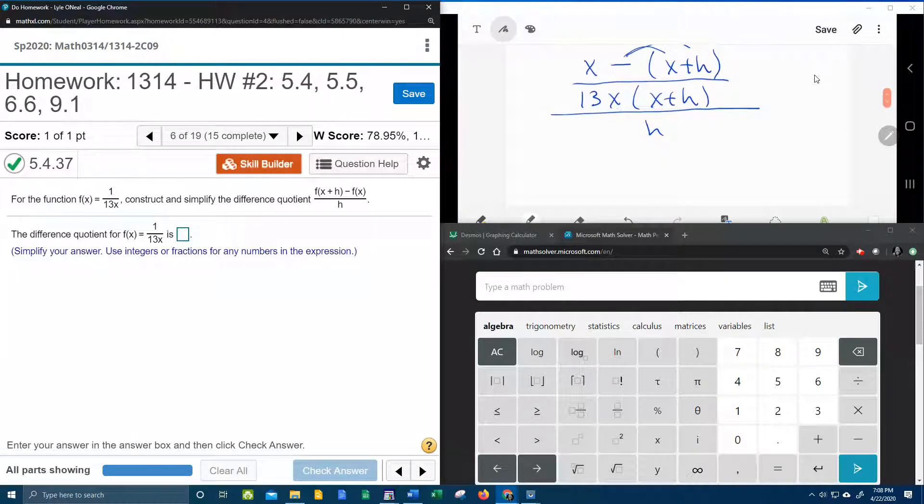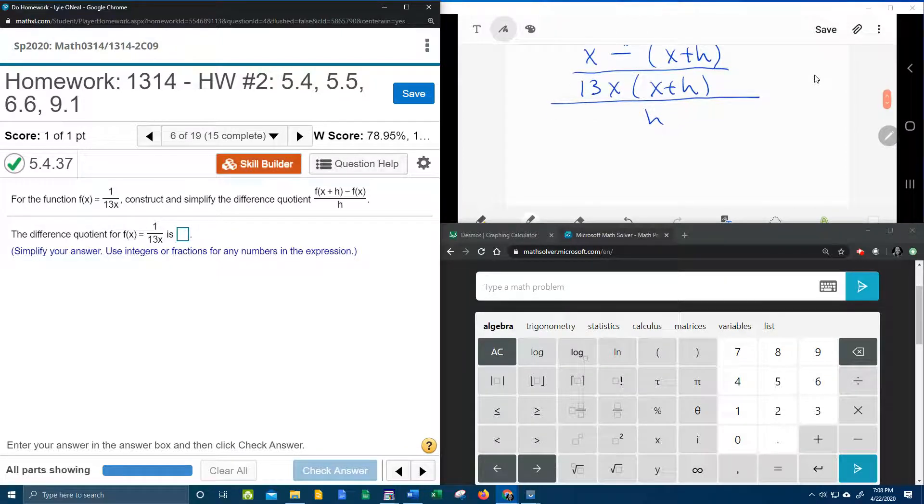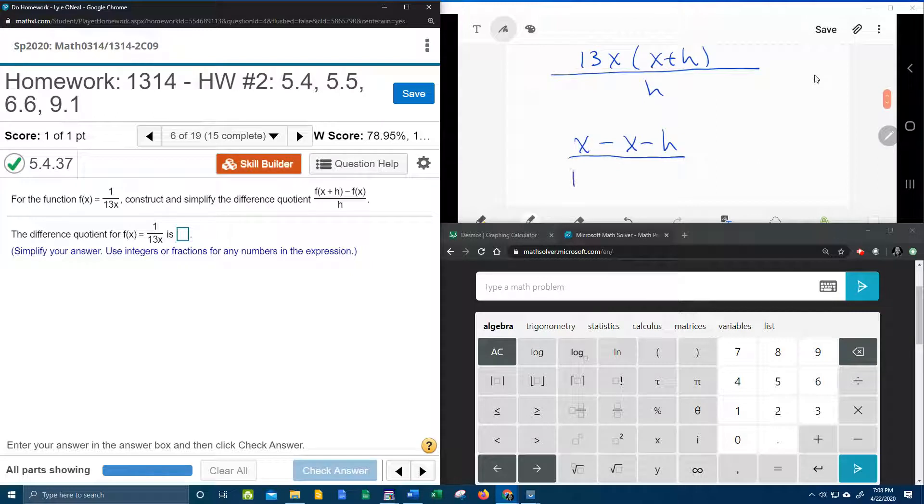Alright, so now let's simplify this. If I distribute the negative here in the numerator, that gives me x minus x minus h, all over our common denominator of 13x times x plus h. Now notice it says all over h.